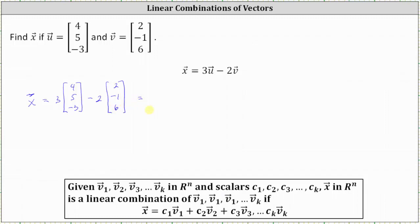The next step is to perform scalar multiplication and then subtract the two vectors written using column matrices. Three times vector u has components 12, 15, negative nine. Minus two times vector v has components four, negative two, 12.